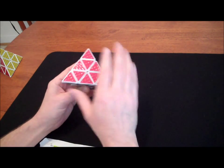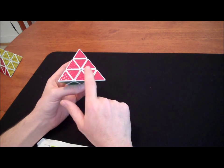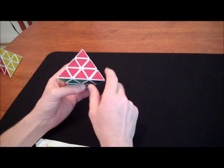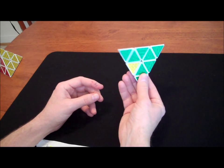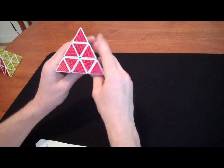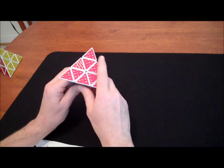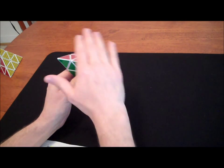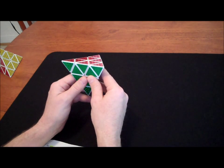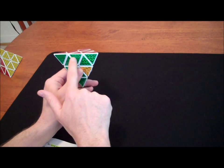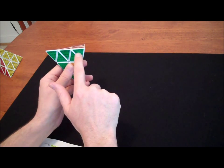What you probably have in your Pyraminx is this: one color in all the right locations, but not all the other sides solved. What I want you to do is if you have one side now solved, just take a look at it and hold it this way. Take your solved side and have it face up.